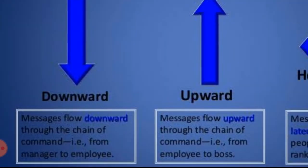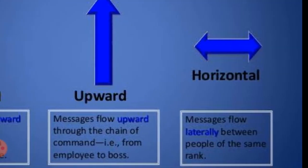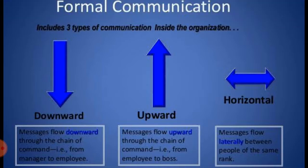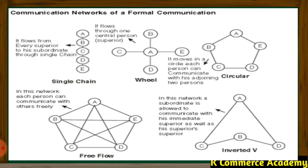Messages flow downward through the chain of command from manager to employee — that is downward communication with orders and instructions. Messages flow upward through the chain of command from employee to boss when suggestions are given. Messages flow laterally between people of the same rank or same authority level — that is horizontal communication. Diagonal communication has already been explained.